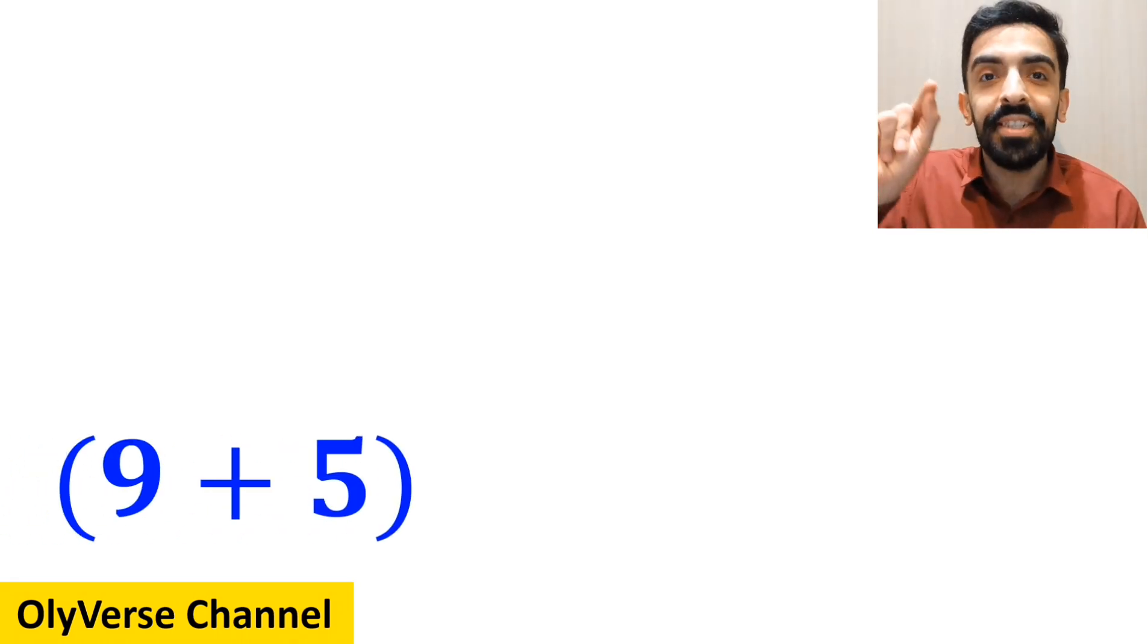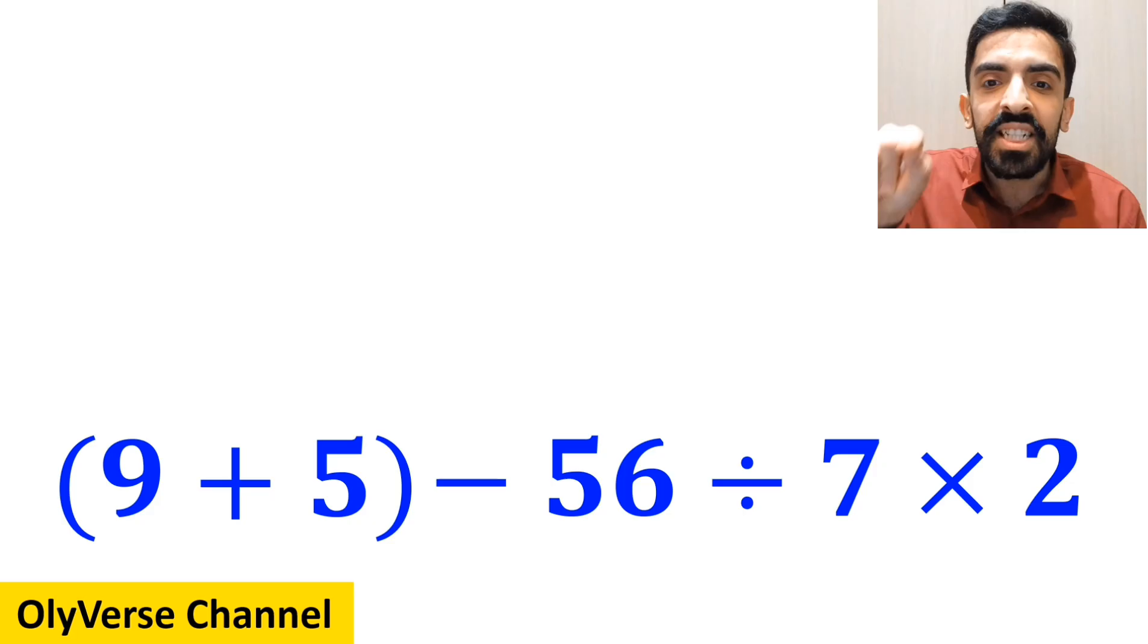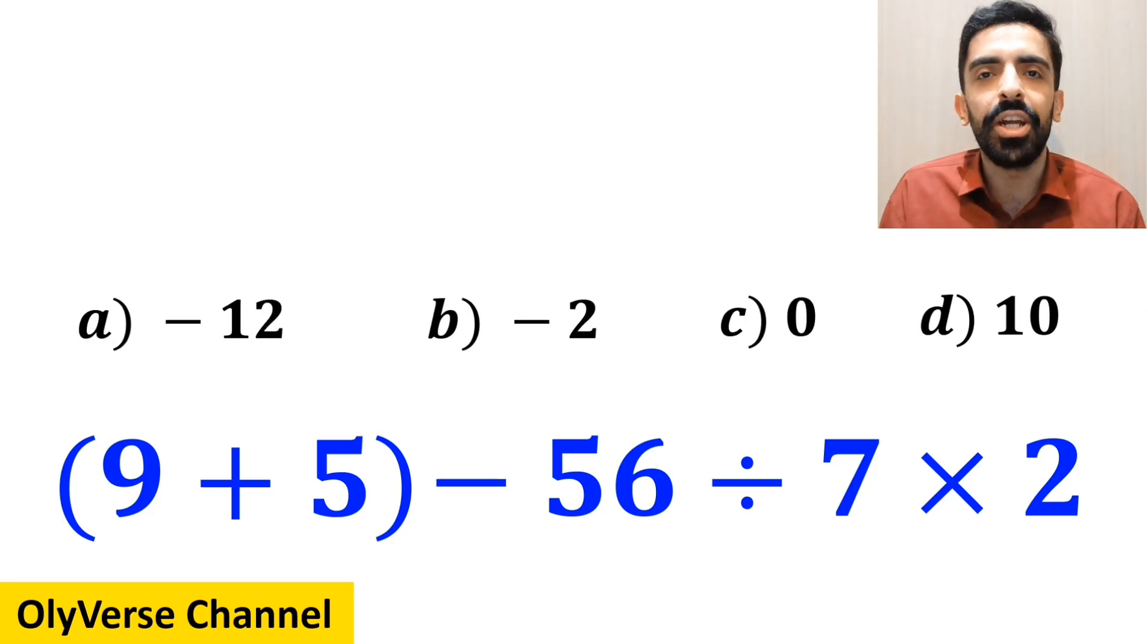What is the value of the expression 9 plus 5 inside parentheses, then minus 56, divided by 7, multiplied by 2? Which option do you think is the correct answer to this question?